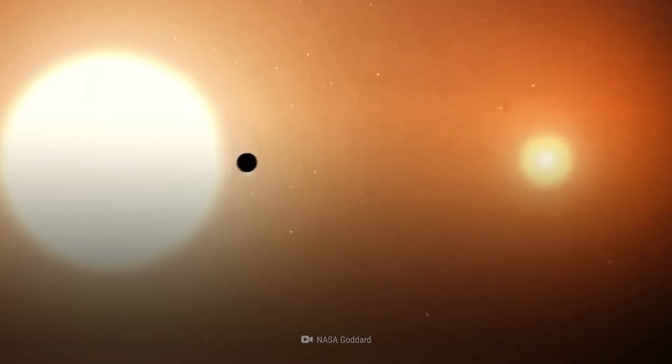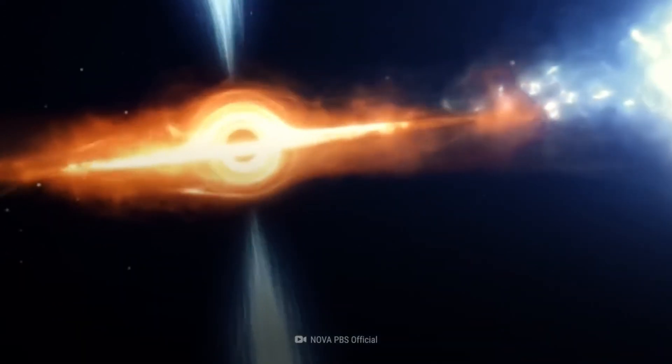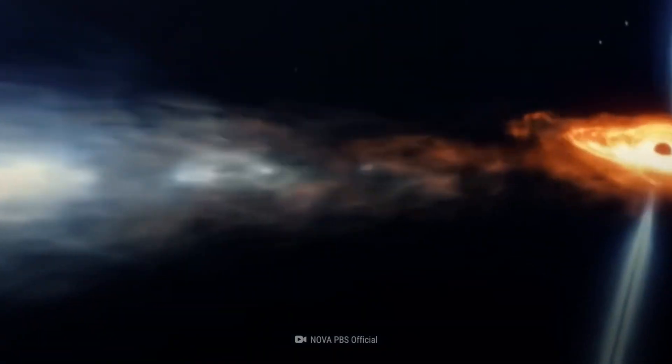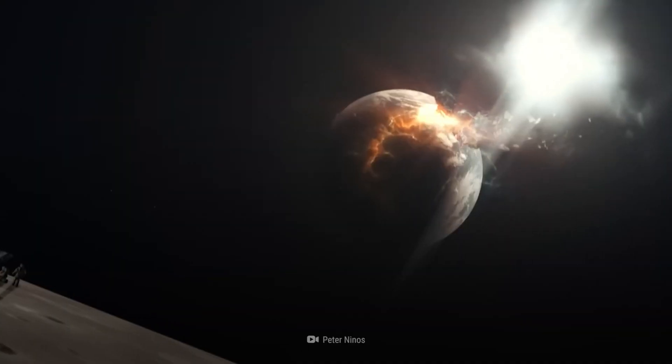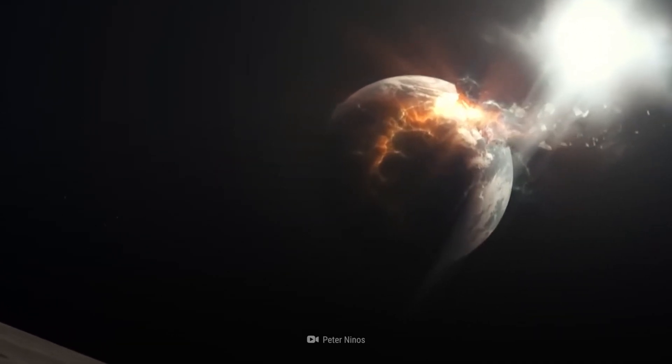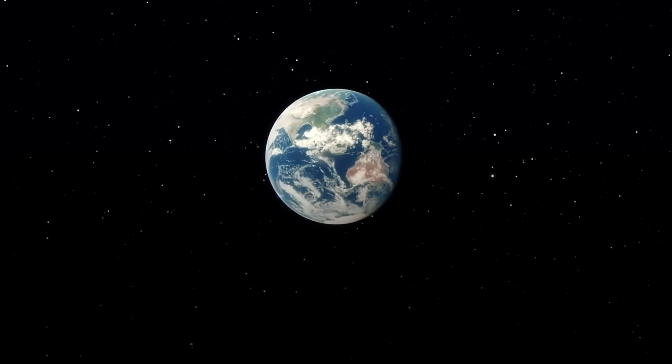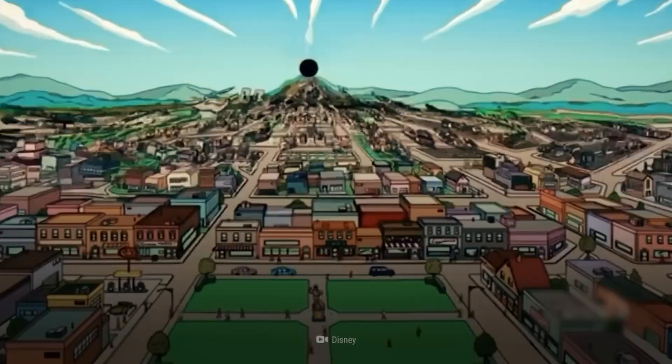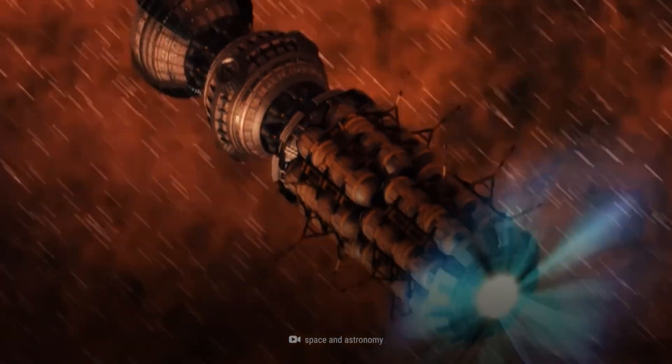M87. This supermassive black hole is located at the center of the galaxy M87, about 55 million light-years away from Earth. It has a mass of about 6.5 billion times the mass of the Sun, making it one of the most massive black holes known. M87 has been studied using a variety of techniques, including observations of the jets of matter and radiation it produces.